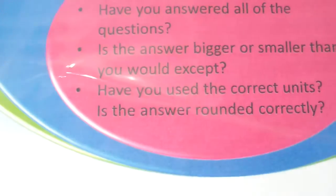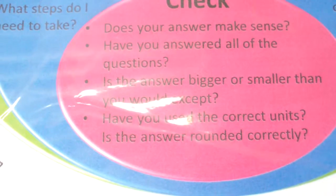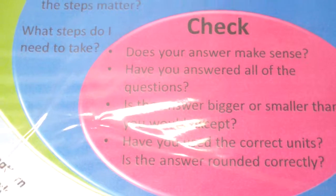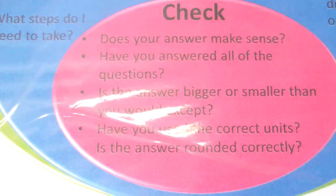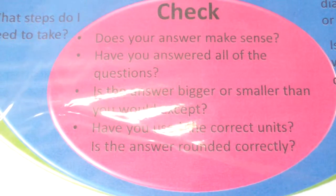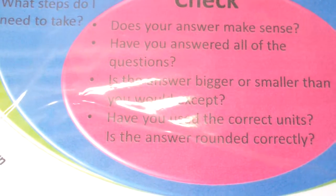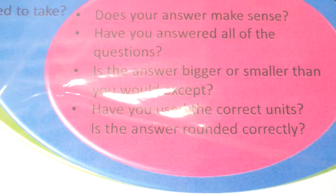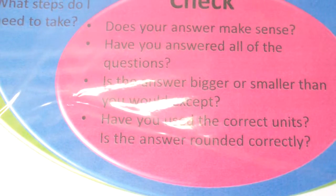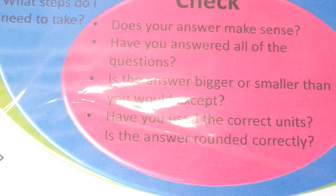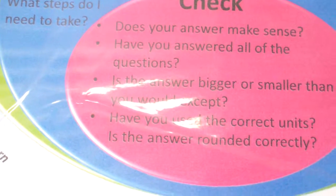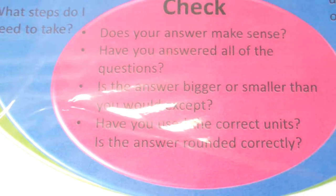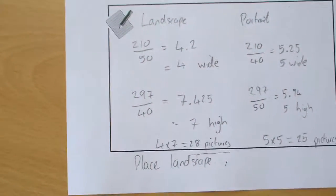So looking back to check, we've included units where we needed to. We took note of units where we needed to. We've answered all of the questions. We've made sure we've identified which way is better, landscape or portrait, and haven't just put the numbers on. We rounded each of the questions appropriately. We couldn't use half of a picture or whatever it was. So we went to the lower amount. We rounded down. And that's the final answer.